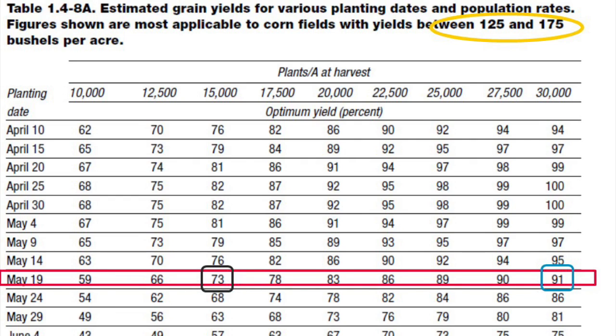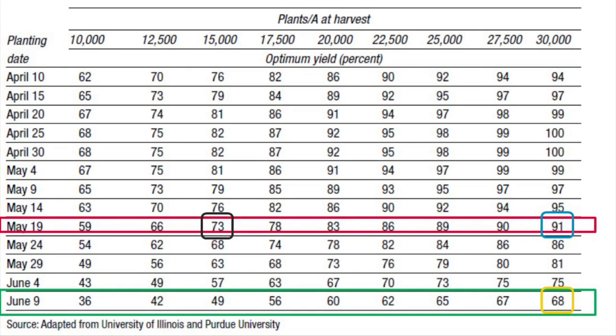But let's say he's now seeing only 15,000 plants per acre — that would reduce yield potential, bringing it to 73%. Now consider he can replant on June 9th; that will give him a 68% yield potential compared to 73% if he leaves the stand as it is. You would think it would be more profitable to leave the stand, giving him 5% more yield, but that's only considering if all those 15,000 plants are of the same height.